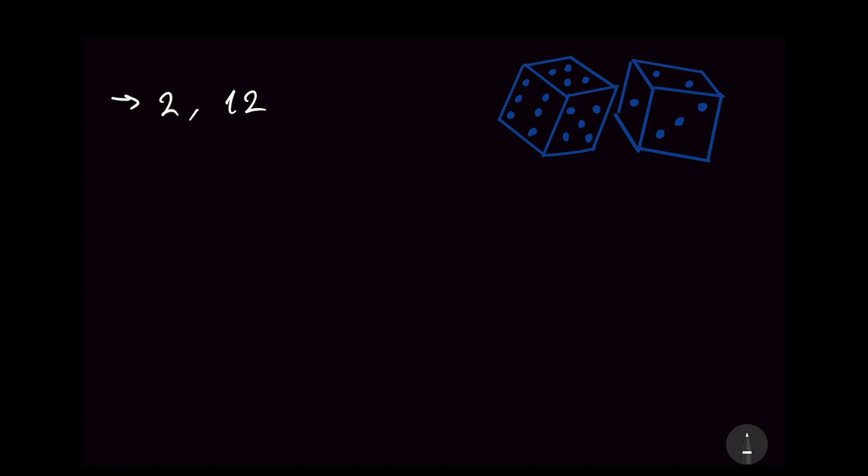These are the minimum and the maximum numbers that we can get out of the dice. So we need a 1 plus 1 to get a 2 and we need a 6 plus 6 to get a 12. So we need the minimum and the maximum on both of the dice to get this number. And there's only one combination that gives rise to both of these numbers.